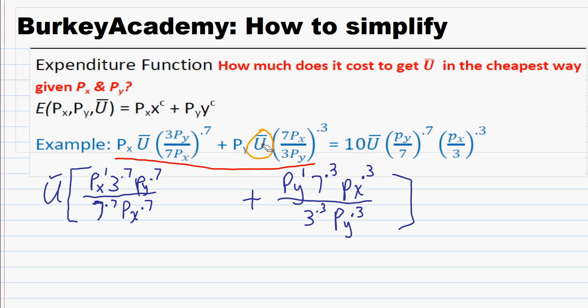And then the second thing that I've already done here down below is I've just taken this first part, first half, and I have written everything explicitly. So I haven't grouped any of the variables. I've written everything out. So this px is here to the first power. I put it in the numerator with three to the point seven power, py to the point seven power. And then the denominator, seven to the point seven power, and the price of x to the point seven power. So everything's explicitly written out there.